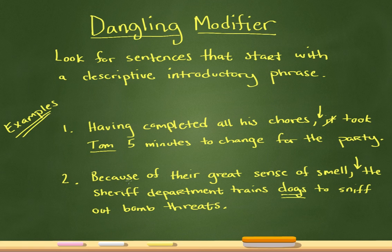It should say something like: 'Because of their great sense of smell, dogs are trained by the sheriff's department to sniff out bomb threats.' That's how you would rearrange the sentence to fix the dangling modifier. These are really simple if you see these intro phrases — if you see them, then you know that whatever follows has to be described by the introductory phrase.